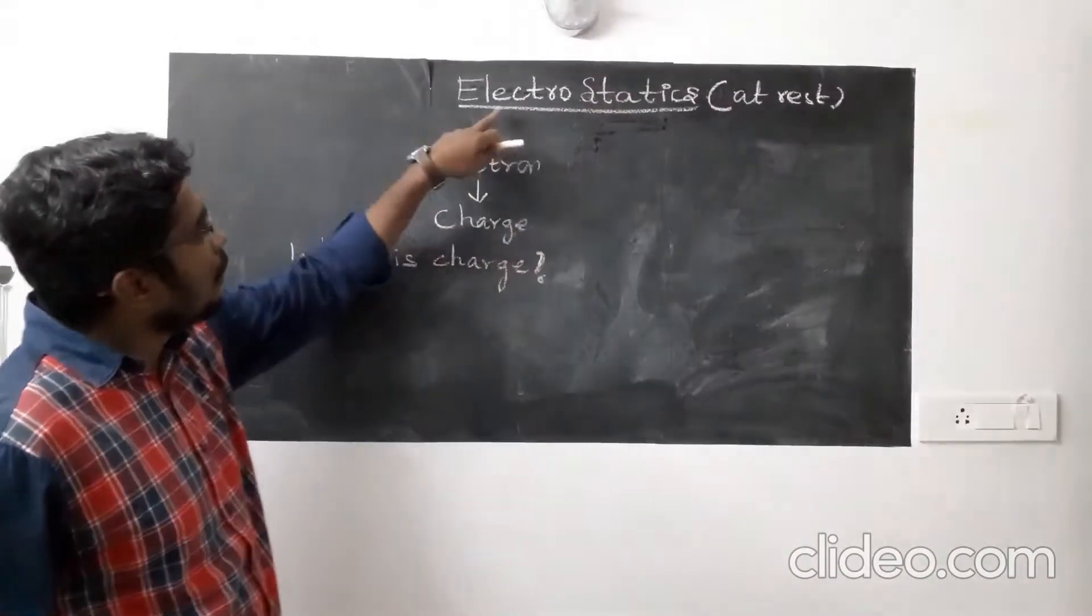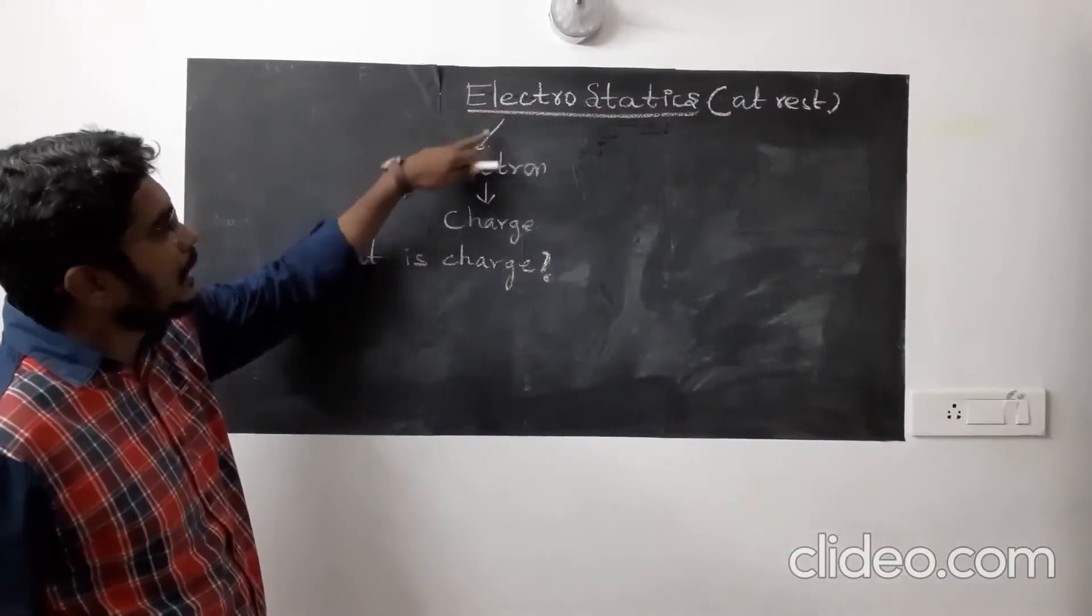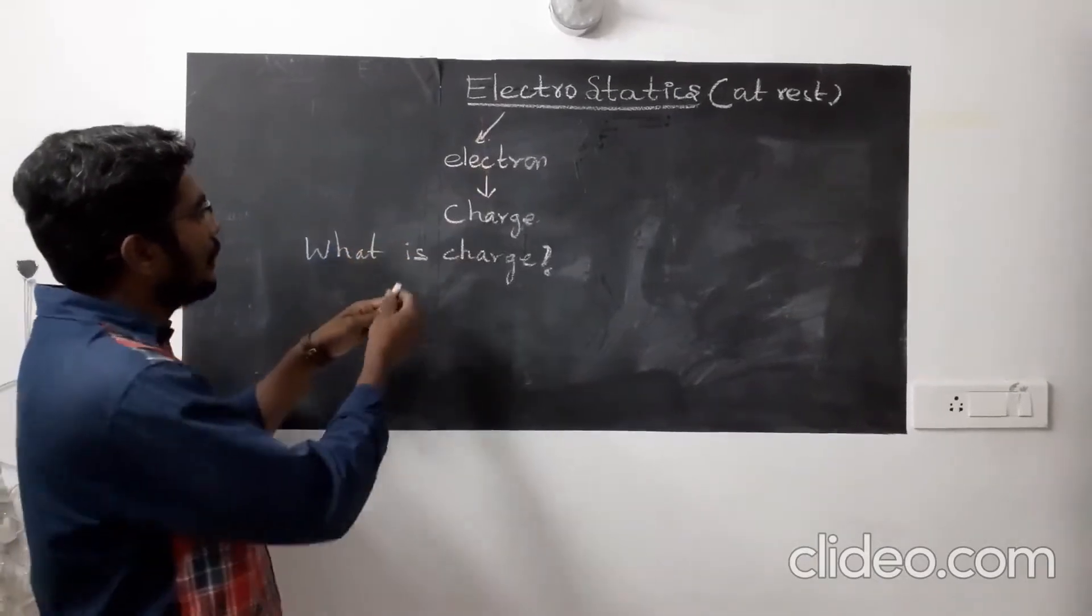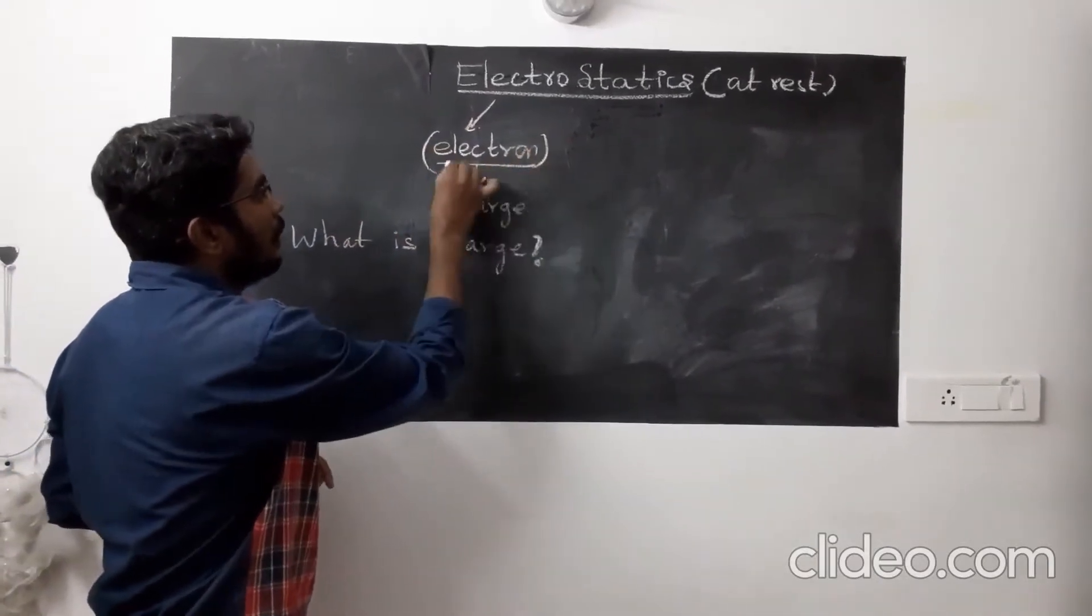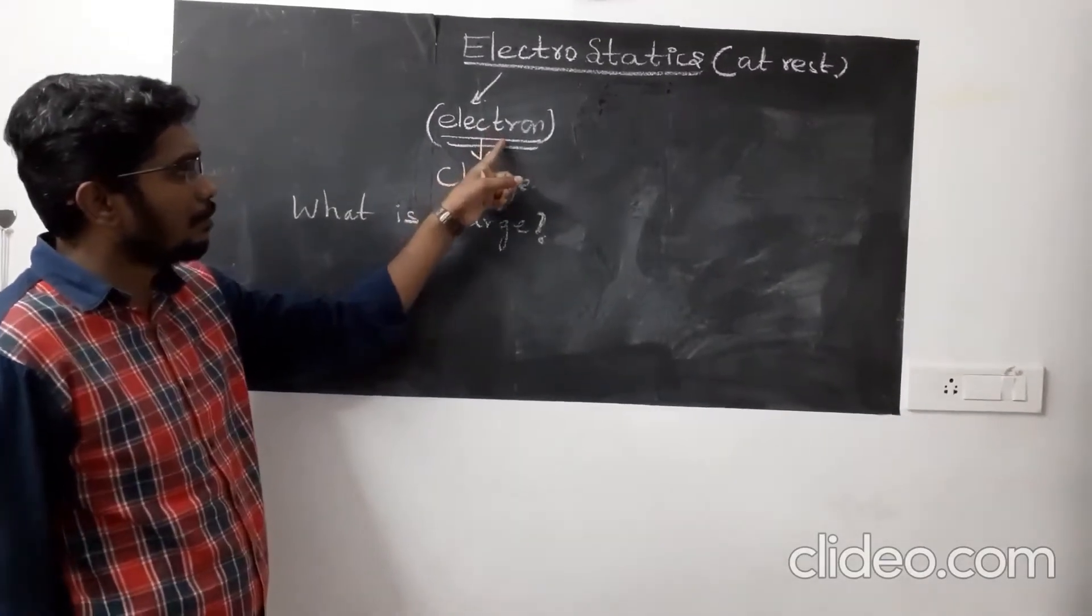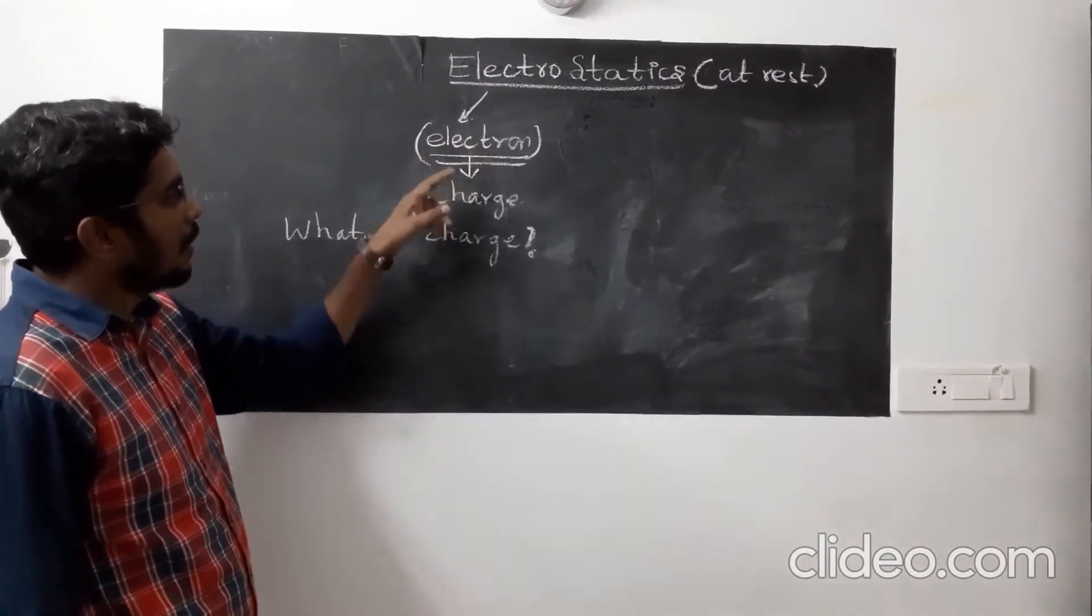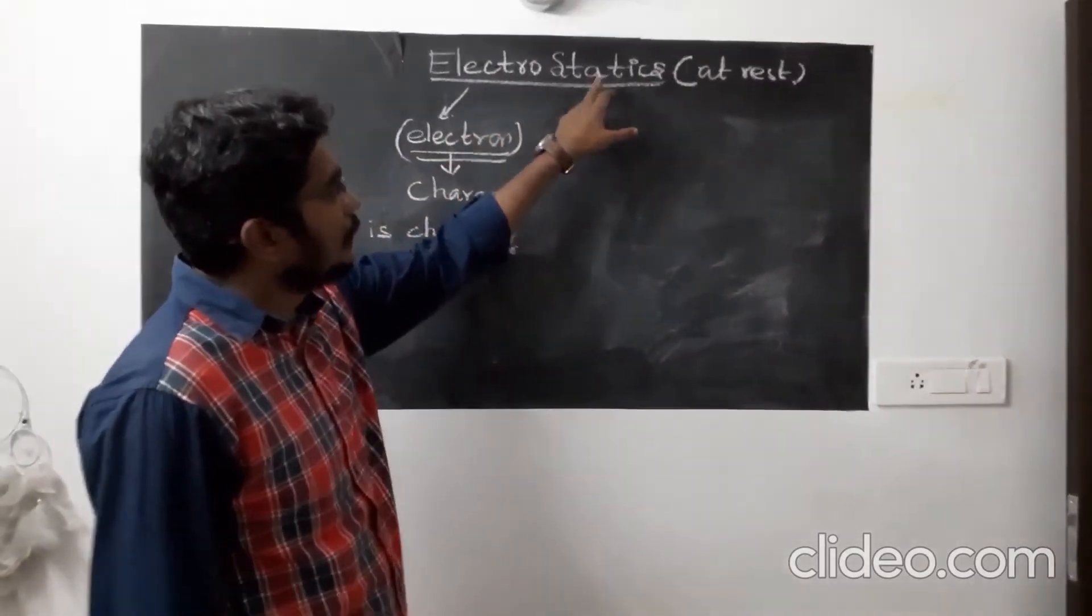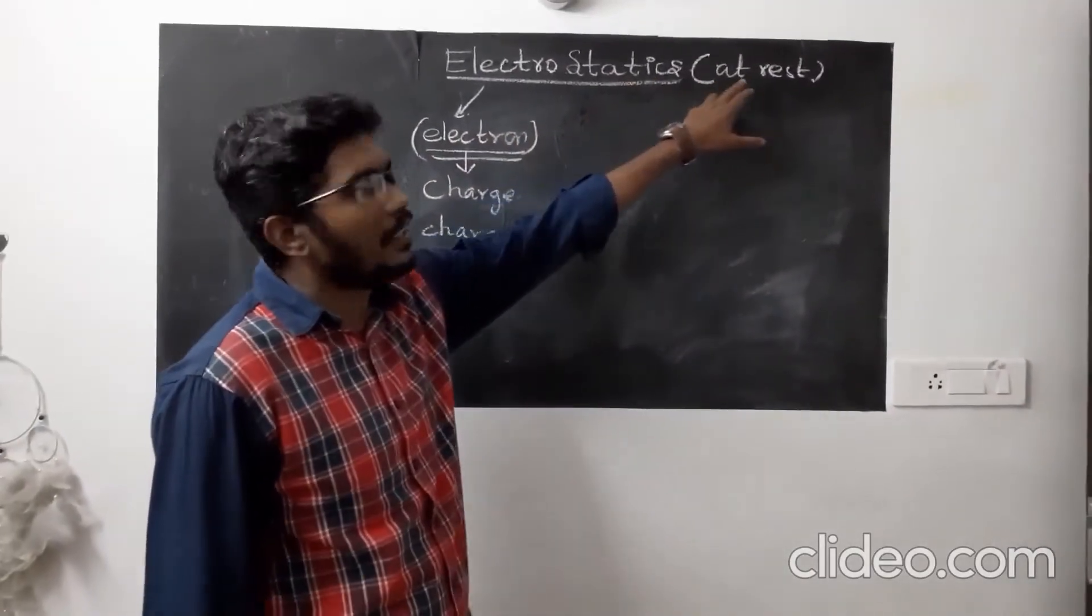So 'electro' is a word related to the term electron, which you may be familiar with from everyday life. This is one of the fundamental subatomic particles that exist in nature. Statics is a science which deals with anything at rest.